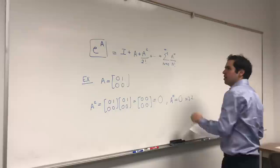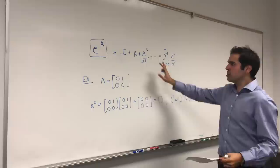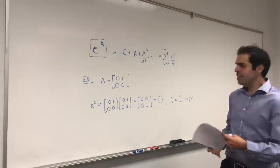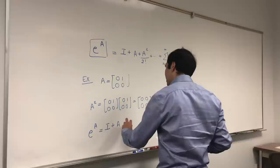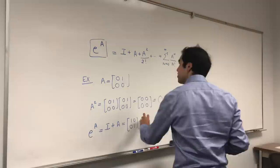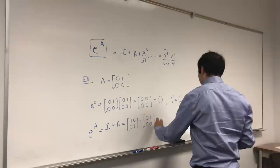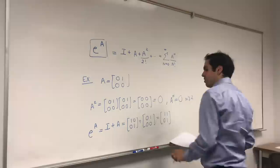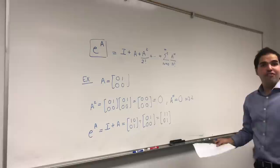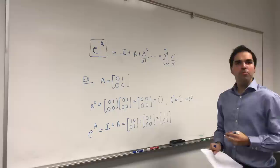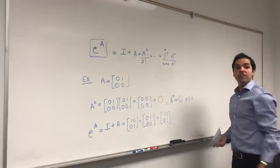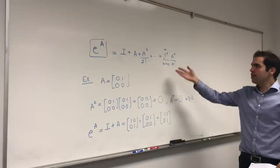So you see, then this infinite series actually just becomes a finite sum. So in this case, E to the A is just the identity matrix plus A, which is 1, 0, 0, 1 plus 0, 1, 0, 0, which is 1, 1, 0, 1. And in general, if some power of A is 0, that's called nilpotent matrix, then the E to the A is easy to calculate because the infinite series just becomes a finite sum.